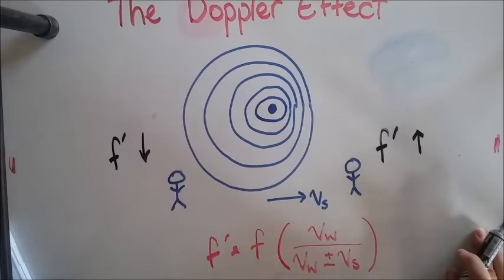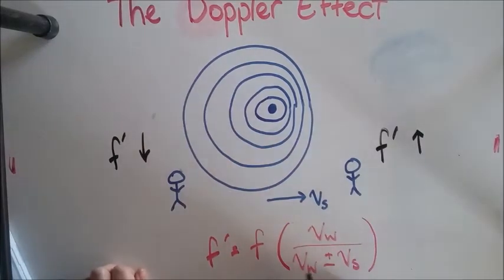That's why you don't notice the Doppler effect if the speed of the source is very small compared to the speed of the wave. So you only notice it if this is big enough to become a reasonable fraction.